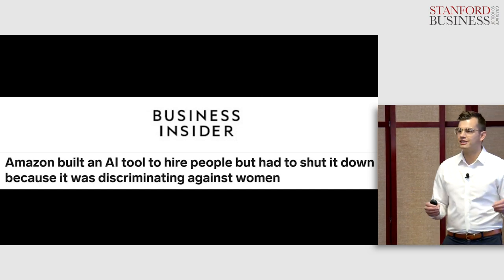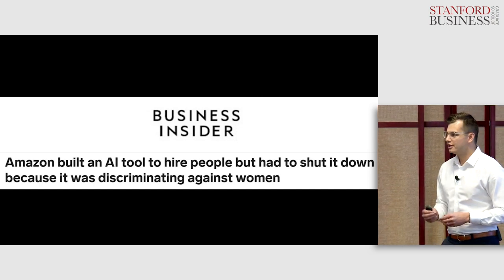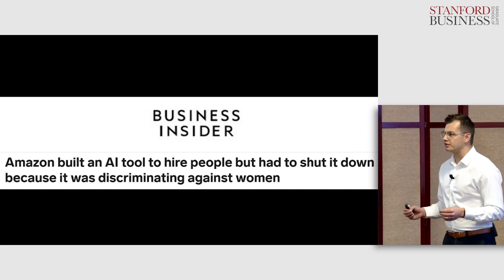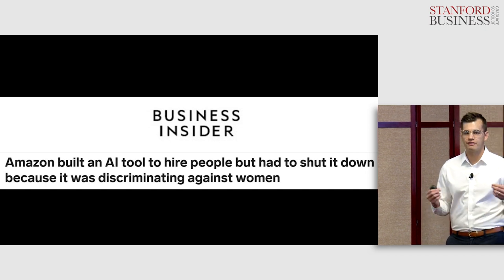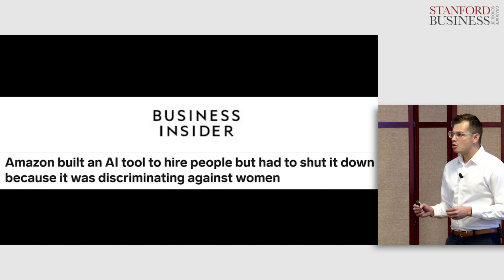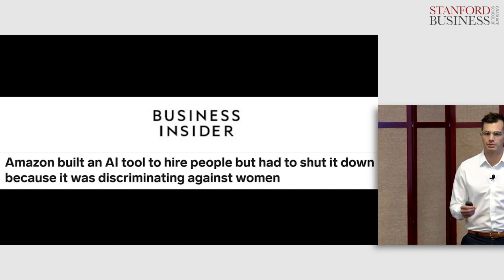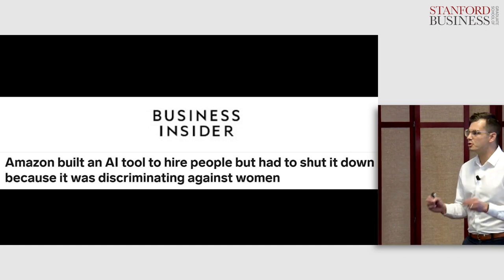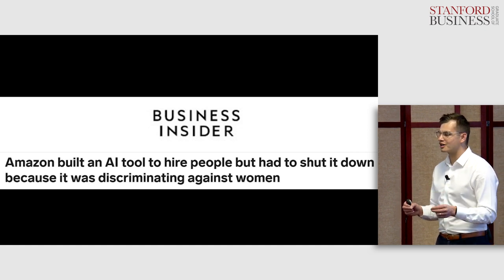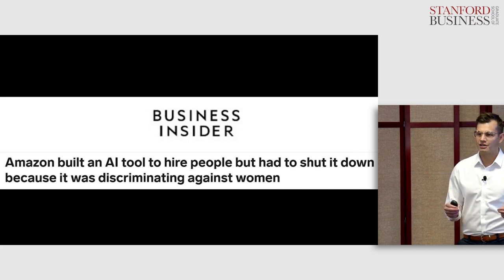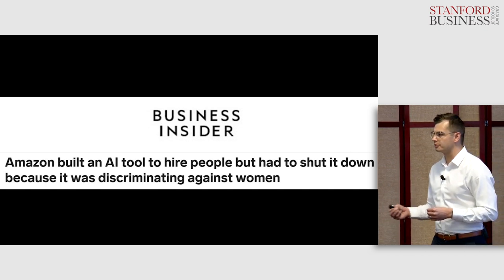Take Amazon's hiring algorithm, abandoned in 2017 for gender bias. This algorithm learned the characteristics of Amazon's best employees and applied that pattern to hundreds of thousands of job applicants. The problem was that at the time, Amazon's top employees were predominantly male, so the algorithm learned to discount female applicants. Even when they removed gender from the model, the algorithm learned to use proxies for gender and discounted applicants for phrases such as "women's swim team" or attendance at an all-women's school.